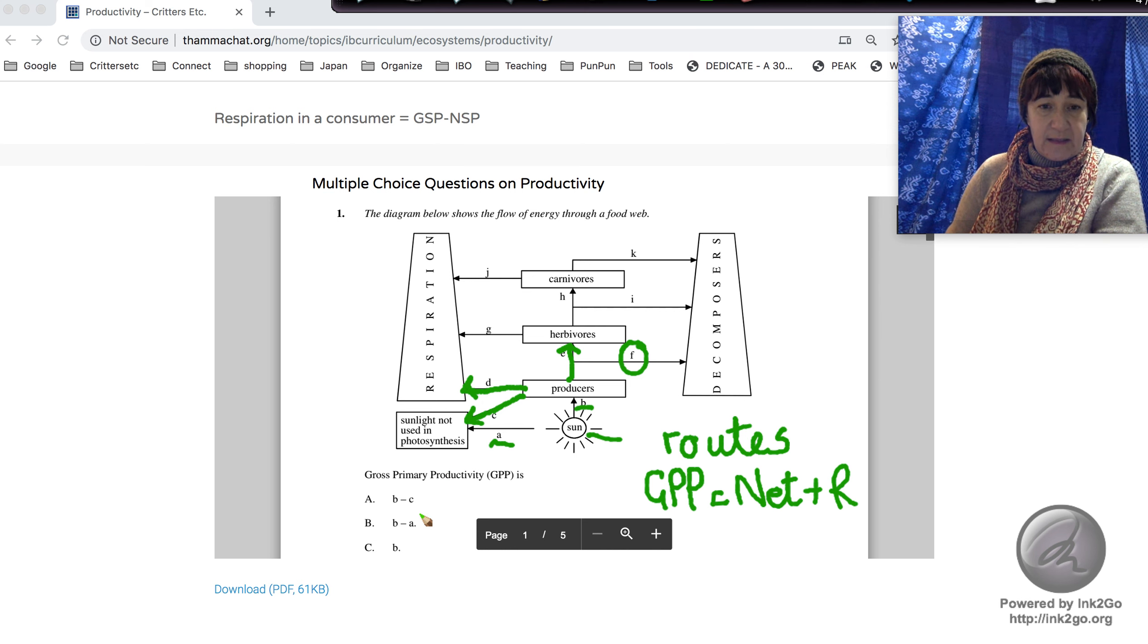So we're looking at B minus C. B minus C—we're not subtracting R because R is part of GPP. So B minus C, and that is answer A.